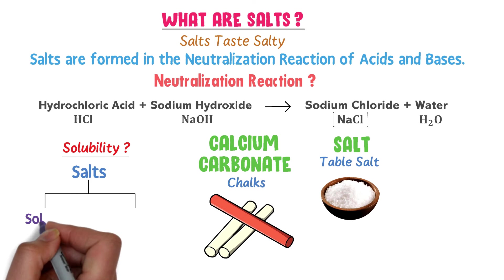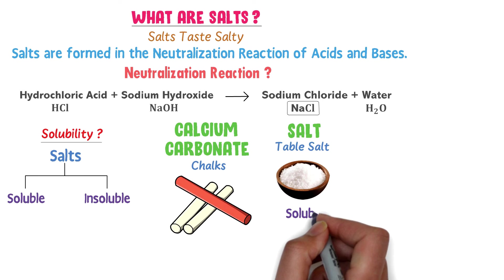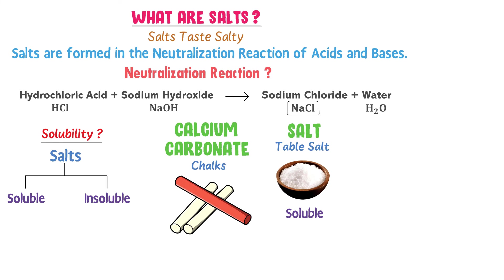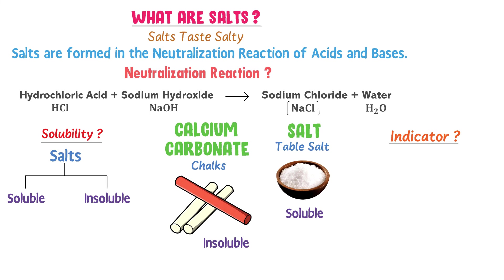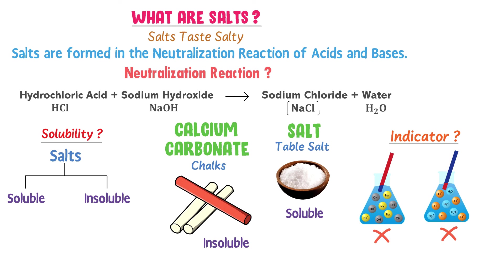Salts are of two types: soluble in water and insoluble in water. For example, sodium chloride or table salt is soluble in water, while calcium carbonate or chalk is insoluble in water. What about the indicator test of salts? Salt can neither turn red litmus paper blue nor turn blue litmus paper red — the color of either litmus paper remains constant with salt. Just remember that salts are formed in the neutralization reaction of acids and bases, salts may or may not be soluble in water, and salts cannot change the color of blue or red litmus paper.